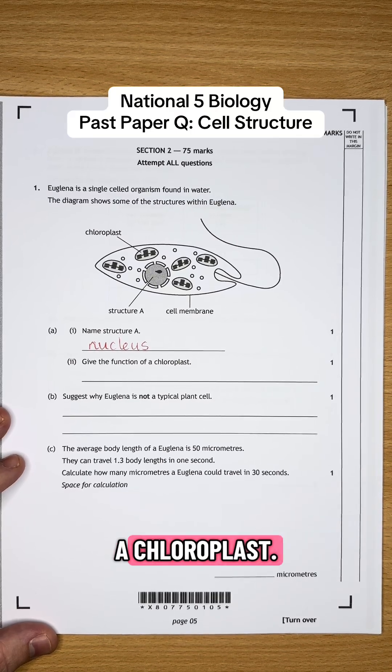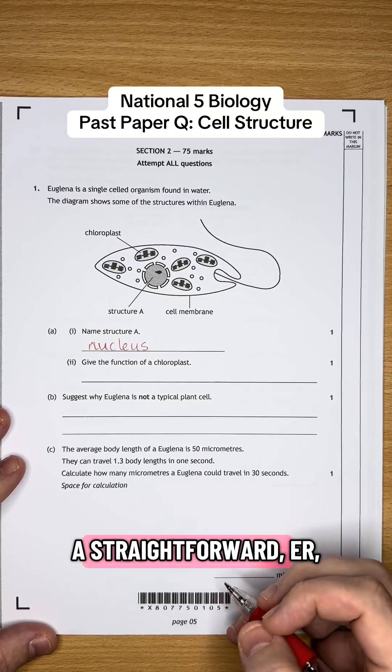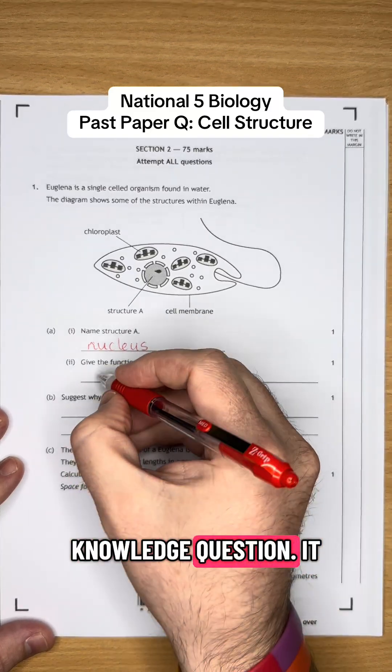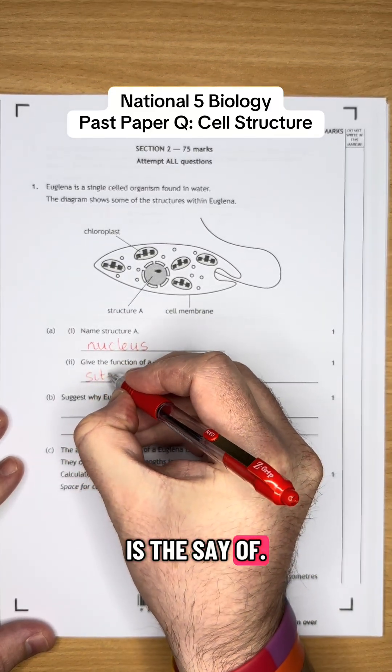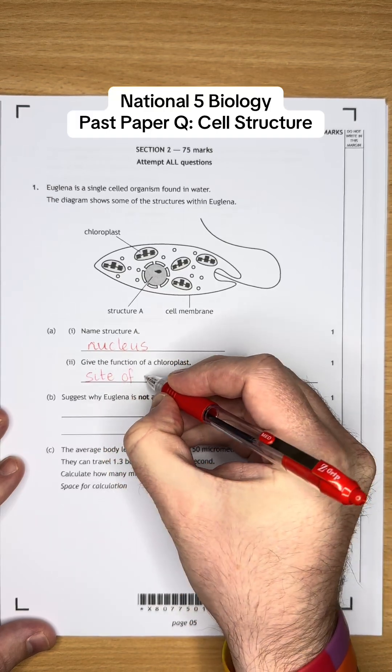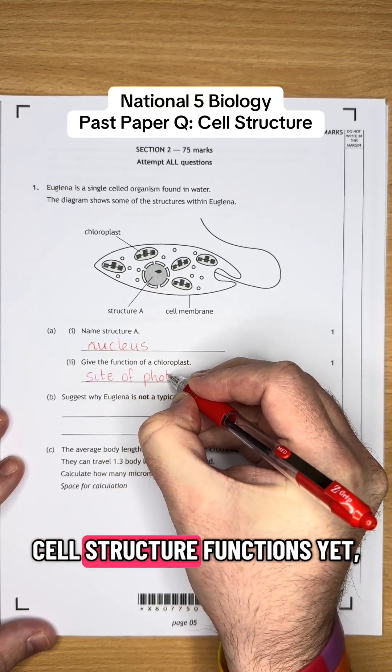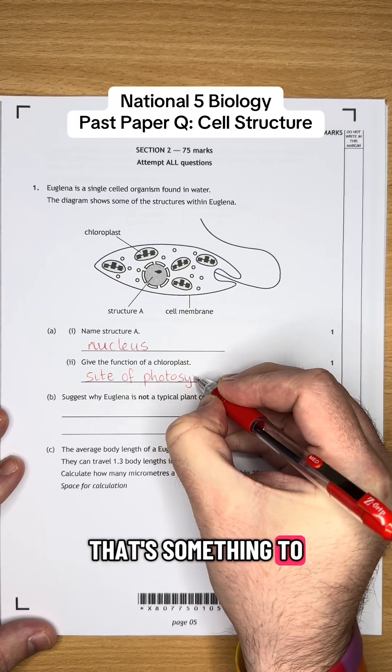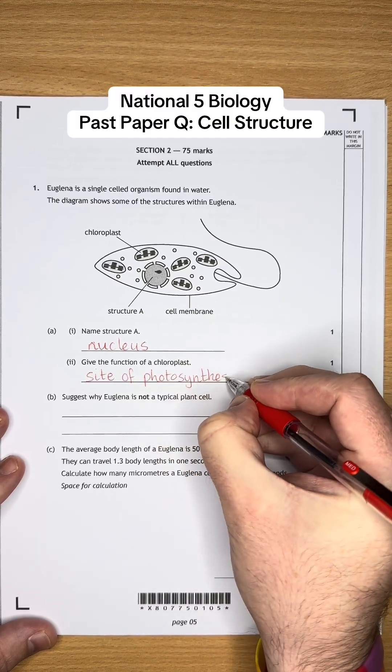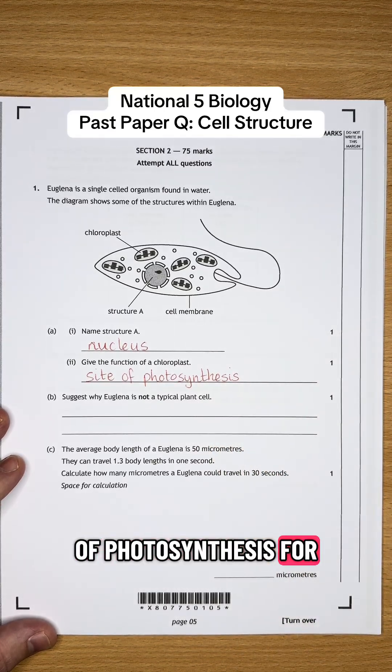Number 2, give the function of a chloroplast. And again, I'm hoping this is a straightforward knowledge question. It is the site of... And if you don't know your cell structure functions yet, that's something to go back and have a little look over. So the site of photosynthesis for the chloroplast.